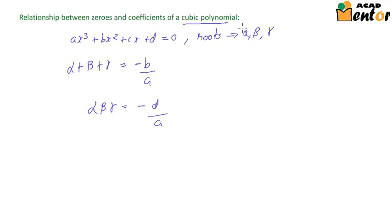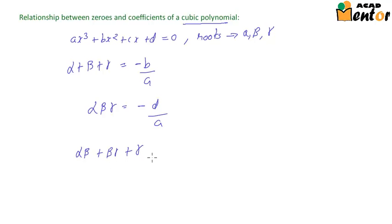For a cubic polynomial there is one more relationship between zeros and coefficients: when we sum up the product of roots taken two at a time — alpha times beta, plus beta times gamma, plus gamma times alpha — this expression equals the coefficient of x divided by the coefficient of x³, which is c by a.